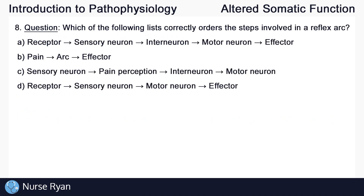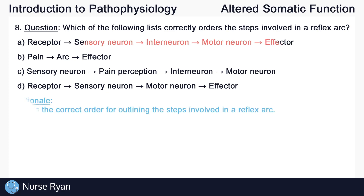Question number eight: which of the following lists correctly orders the steps involved in a reflex arc? The answer here is A, starting at a receptor, sending information through a sensory neuron to an interneuron, bringing that information through a motor neuron, and then to an effector.